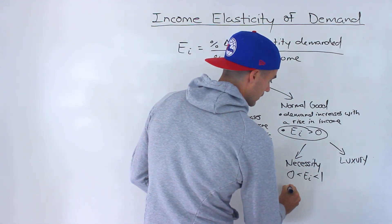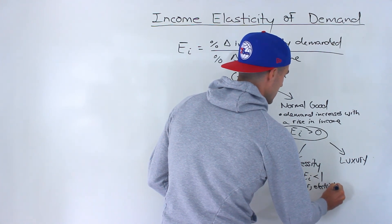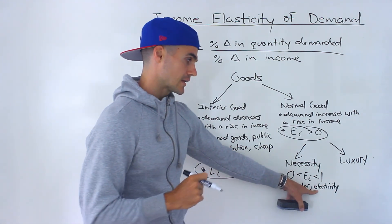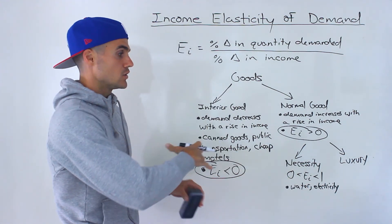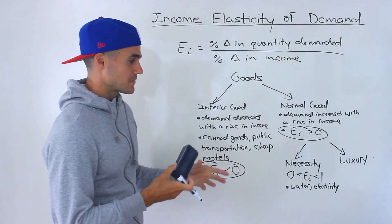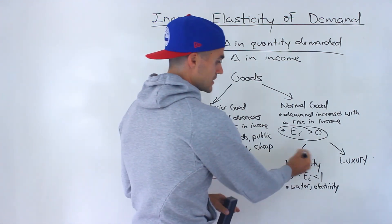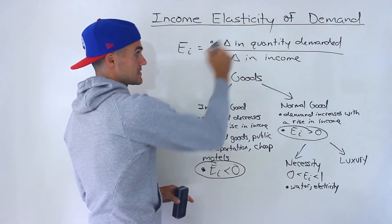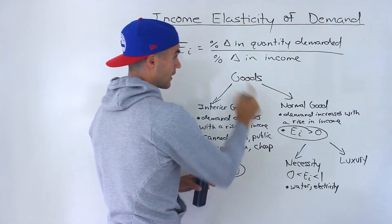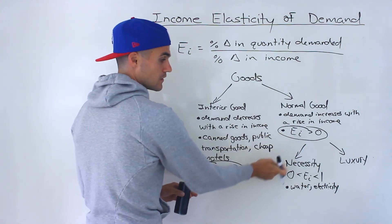Necessities could include stuff like water or electricity. For example, if your income is lower, you may be living in a smaller place paying for less electricity, and if your income rises you may get a bigger place. That demand for electricity is going to go up, but not by a substantial amount. So the quantity demanded is increasing, but not by a huge amount compared to income, and that coefficient is just going to be between zero and one — still positive, but between zero and one.